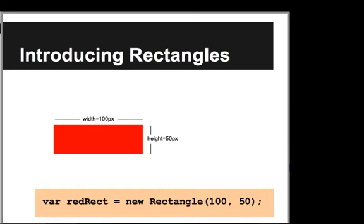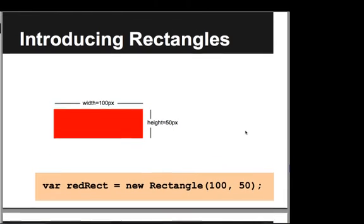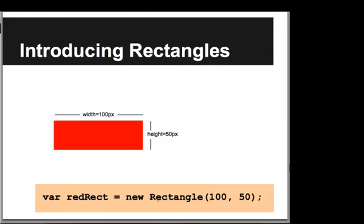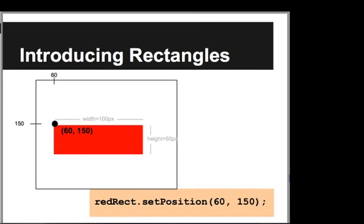Looking more closely at the code: when we say new Rectangle, we give it the width and height — so the two numbers are the width and height of the rectangle. The next thing we do is set the position. We call setPosition and give it the position of the top left corner of the rectangle, so here the top left corner goes to (60, 150).